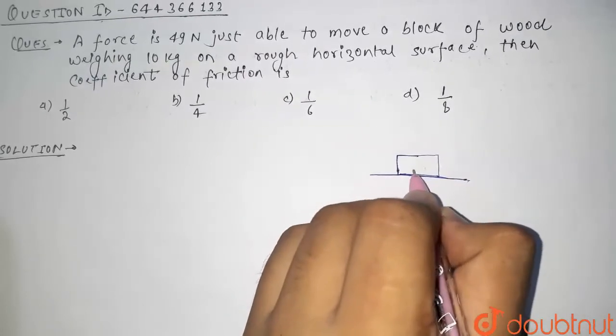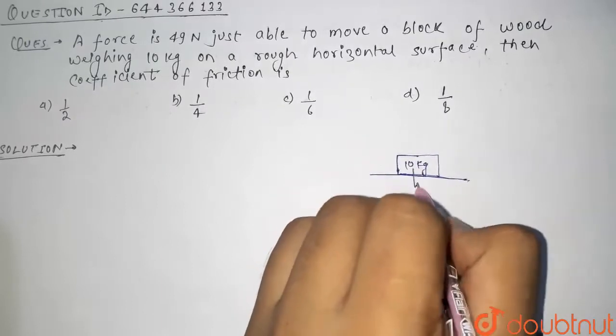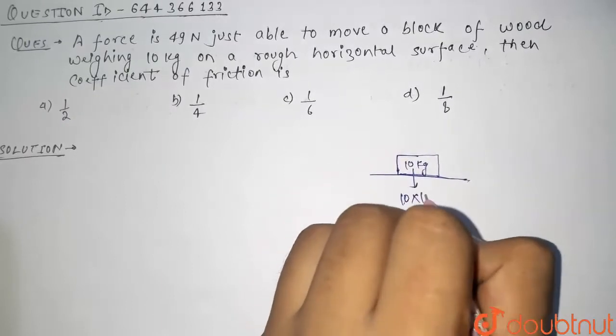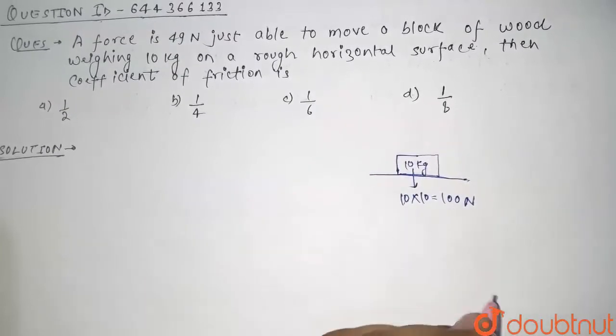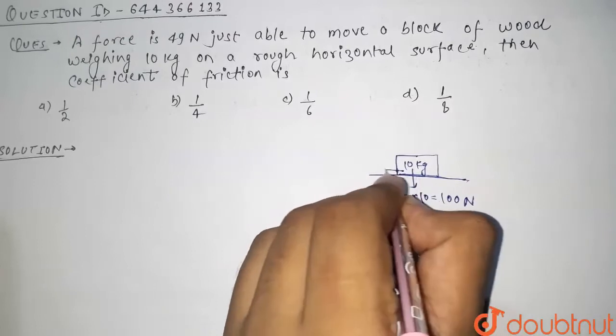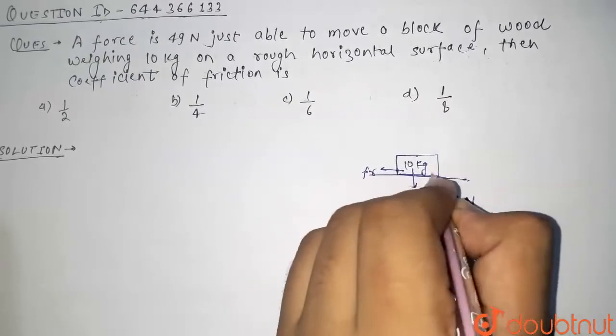The weight of the block is given as 10 kg. Mass is 10 into 10, that is 100 newtons. This is our weight of the mass. Now friction force is also acting in the backward direction and the normal force is acting in the upward direction.